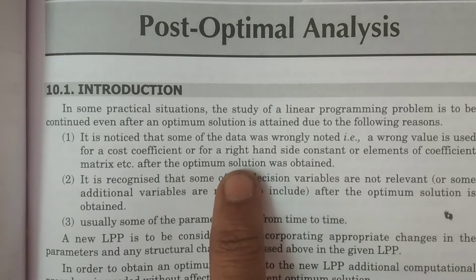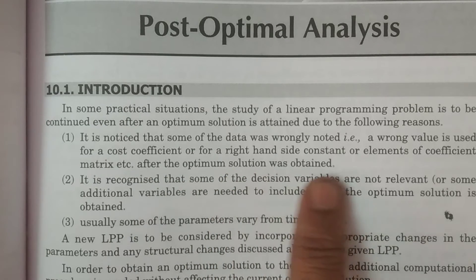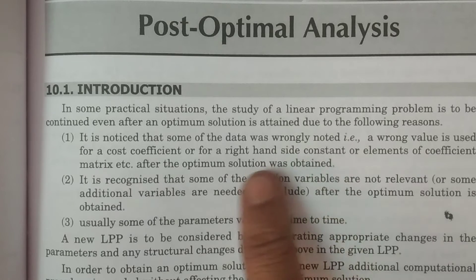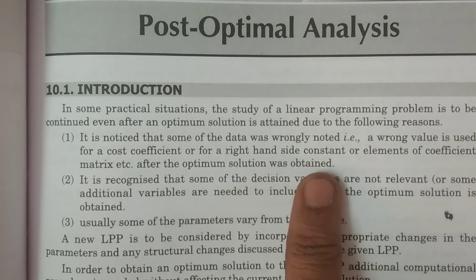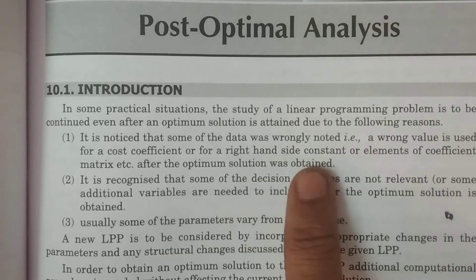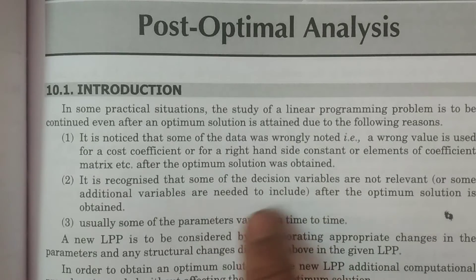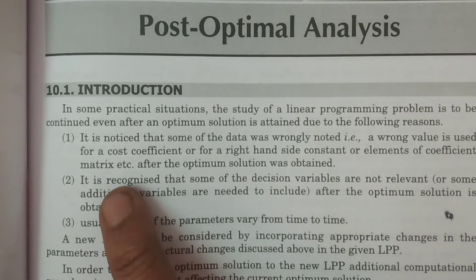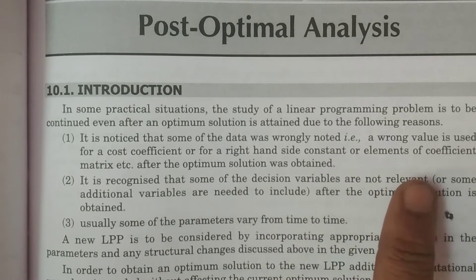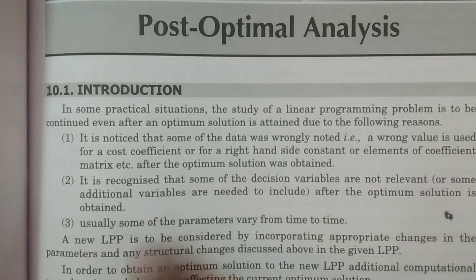For example, the right-hand side constant, that is Bi, may be wrongly noted. Or elements of the coefficient matrix, that is Aij — A11, A12, and so on — which are the elements of the coefficient matrix, may also be wrongly noted.